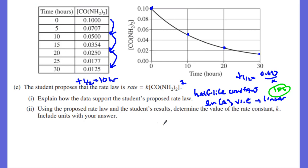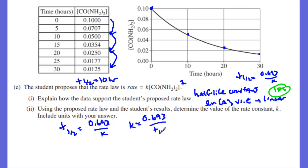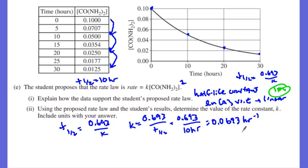They also asked for K. The half-life equals 0.693 over K, which means K equals the natural log of 2 — or 0.693 — divided by the half-life. So K = 0.693 over 10 hours = 0.0693 hours⁻¹. That's worth one point, and you need the units: hours to the negative one.